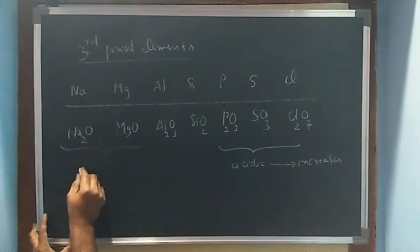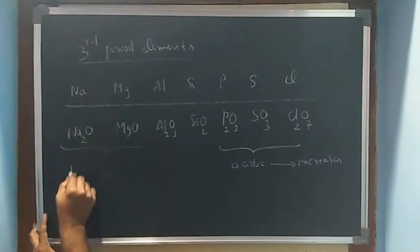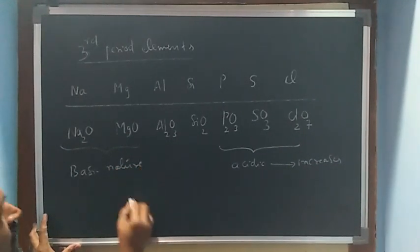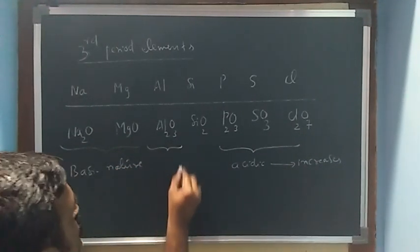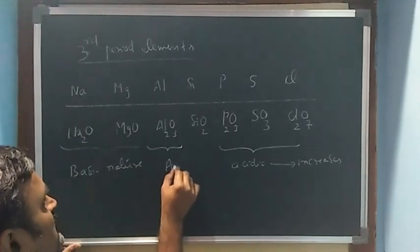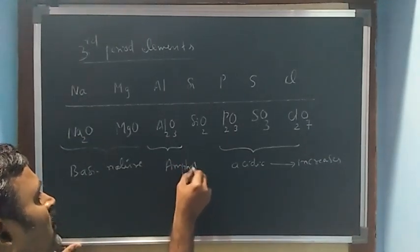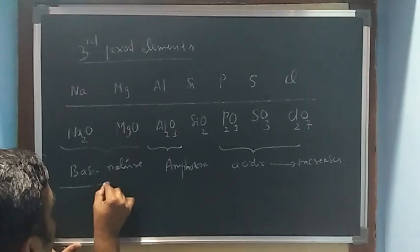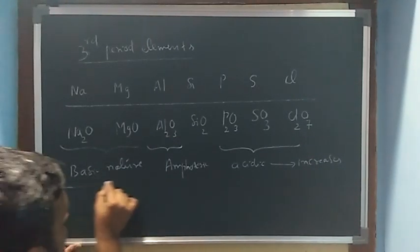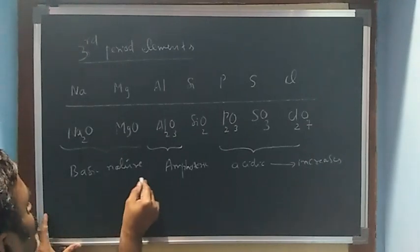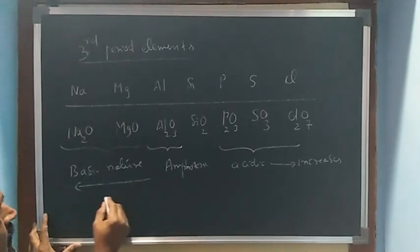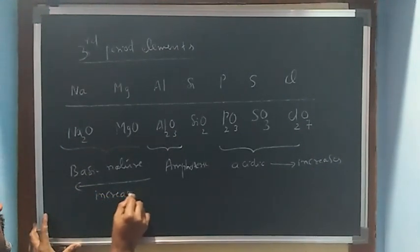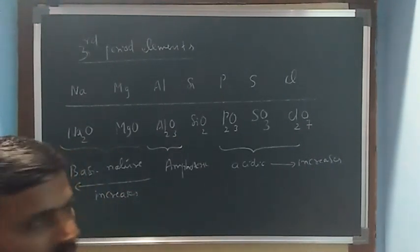First two belong to alkali and alkaline earth metals. They are basic in nature. When it comes to the middle oxides, they are said to be amphoteric oxides, amphoteric in nature. So that means basic nature decreases. Right to left, if you take, this basic nature is said to increase in the third period of elements.